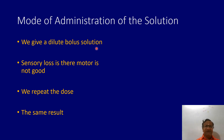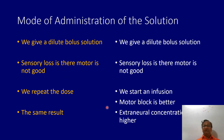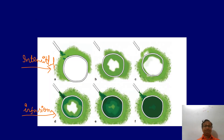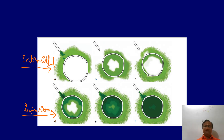If we give a dilute bolus solution and sensory loss is there but motor block is not good, repeating the bolus gives the same result. However, if we start an infusion after the initial dilute bolus, motor block may be better. With infusion, the local anesthetic concentration in nerve roots is more sustained. This lengthens the blockade and increases the possibility of motor blockade, while hemodynamics are better preserved with infusions.